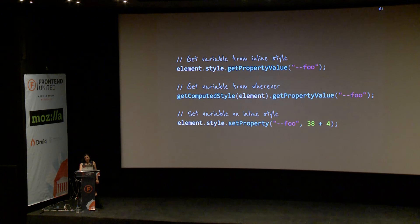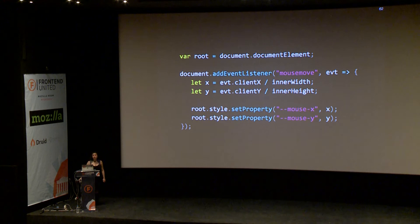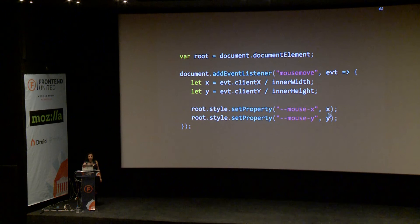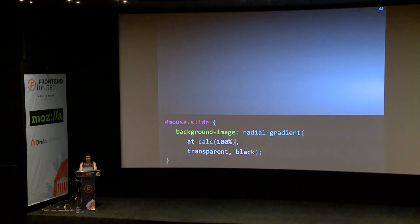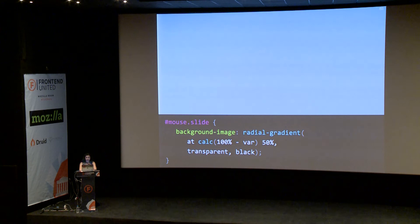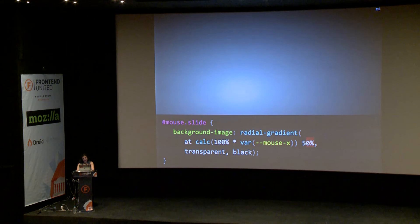So what can we do with this? We can set two variables based on the mouse position. We only need one event listener on the document. We're setting --mouseX and --mouseY to a percentage of how far the mouse has moved. Here we have a radial gradient with its center fixed to the center of the screen. Instead of 50%, I can say calc(100% * var(--mouseX)). And now as I'm moving my mouse, the center of the gradient changes. I can do this with the vertical position as well — now I can move my mouse and the center of the gradient changes.